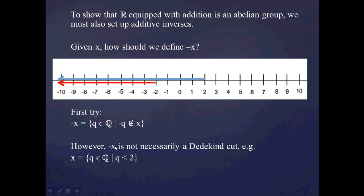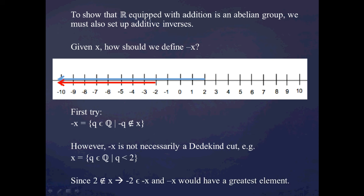The only problem is that negative x defined this way is not necessarily a Dedekind cut — it's not a real number. To see why, take the example where x is the two cut, all the stuff less than two. Two is not in x because two is not less than two, so that implies negative two would be in negative x. And if you look at what's going on, negative x would have a greatest element, namely negative two.